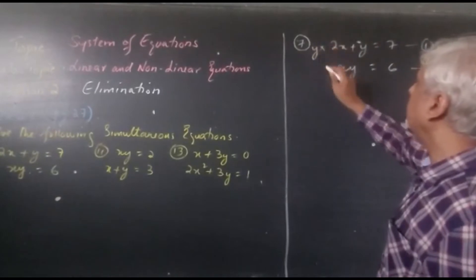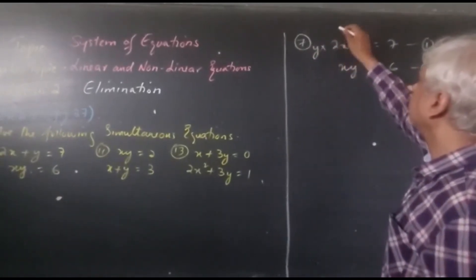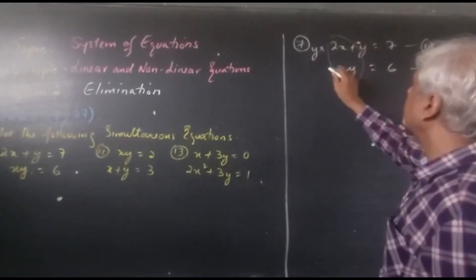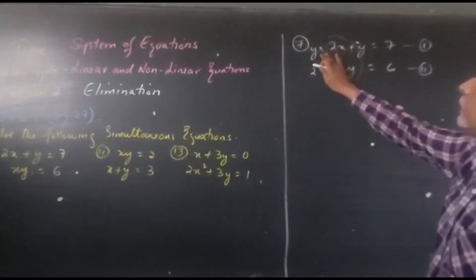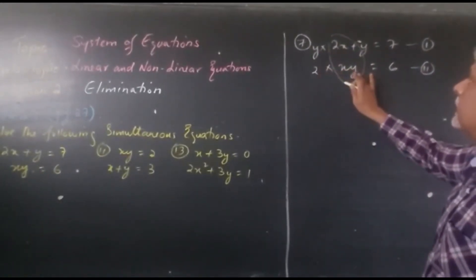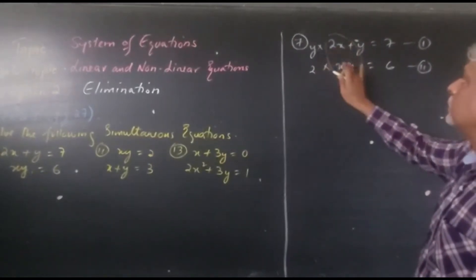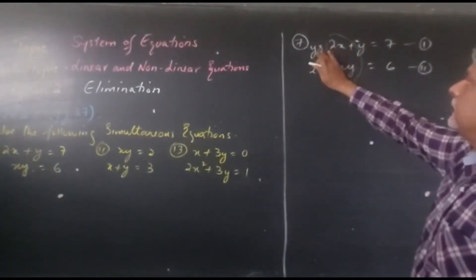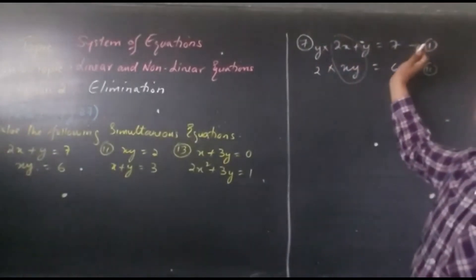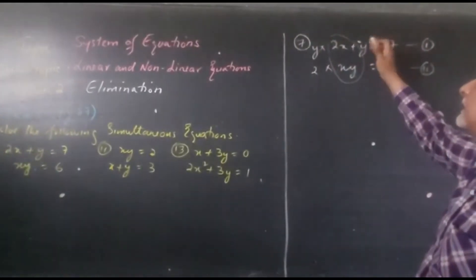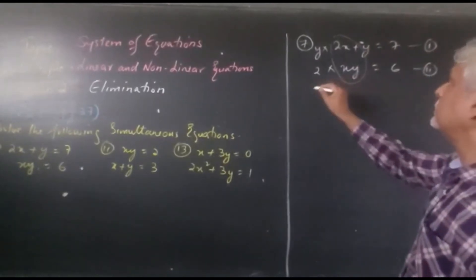And here I can eliminate the whole coefficient by multiplying this equation with 2. So you see you get 2xy and 2xy when I multiply this. Make sure that the x is eliminated completely, not that it is in the next term or the third term.